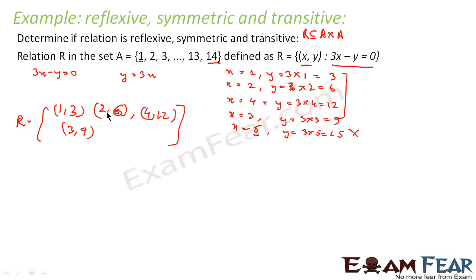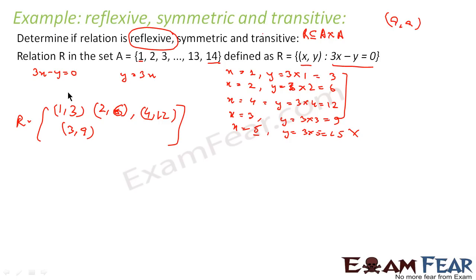Now the first question is whether the set is reflexive or not. For reflexive, (a, a) should exist — that is (1,1), (2,2), (3,3), (4,4) and so on. But if you look, (1,1) is not there, (2,2) is not there — none of these are there. So we can see that it is not reflexive.